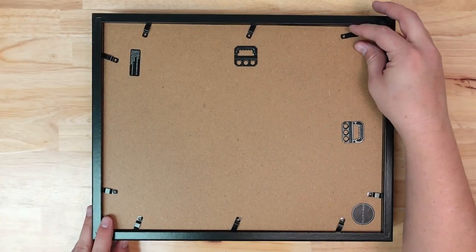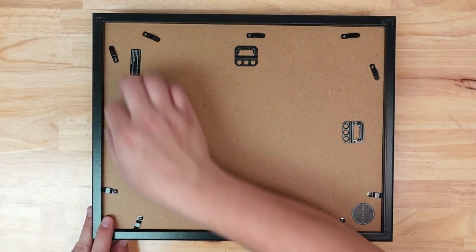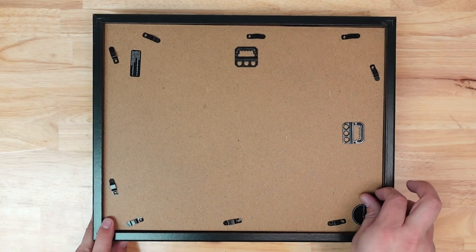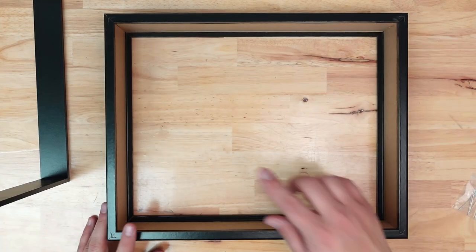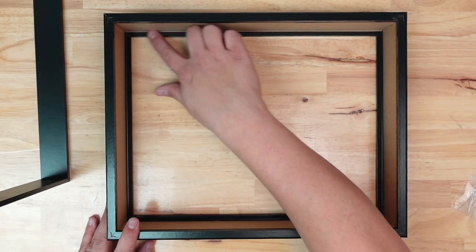For the frame we need something that's deep enough to house the home assistant yellow but also can hide the LED strip that we want to tuck on the inside. I chose an 11 by 14 shadow box frame that's about two and a half to three inches thick and comes with a white backer and it has enough of a lip on the front to hide that LED strip.